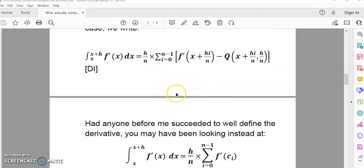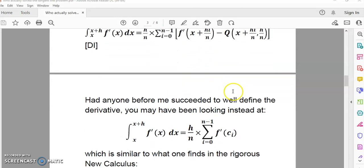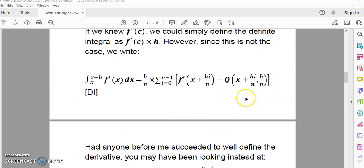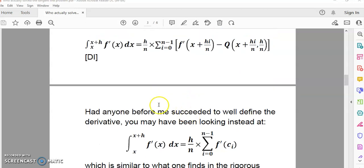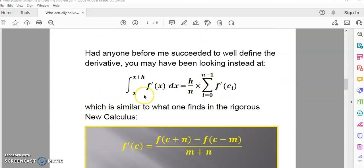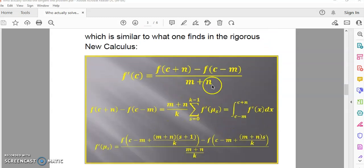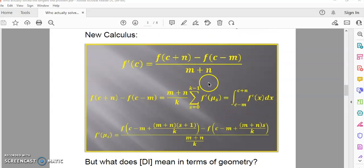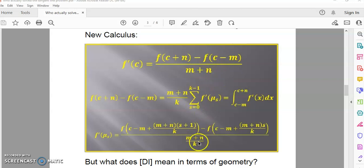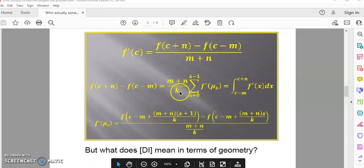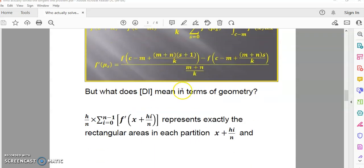I'll explain what these mean in a second. Had anyone before me succeeded to well-define the derivative, you may have been looking instead at this rather than this. And this is more similar to what one finds in the new calculus, which, by the way, what you see in front of you is the entire new calculus summarized in three statements. That's all it's about. There's no infinity there. There's no limits. There's no nonsense.